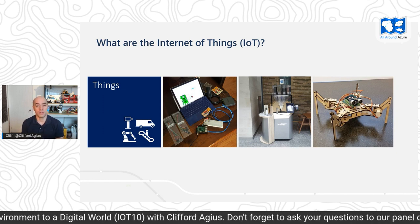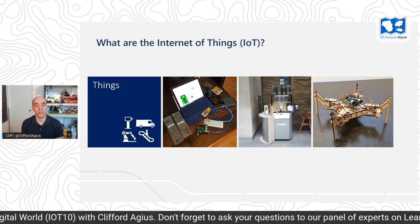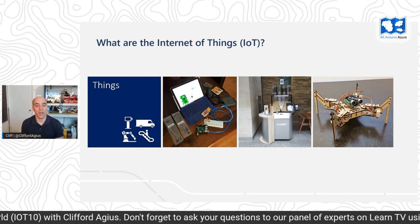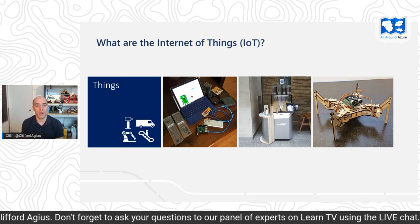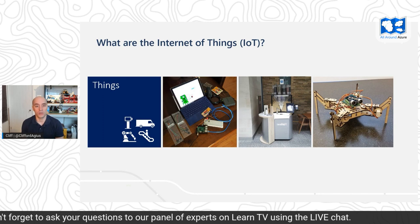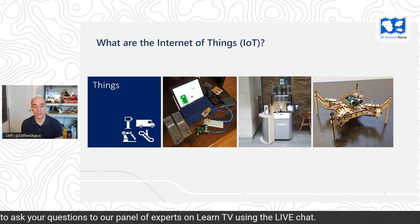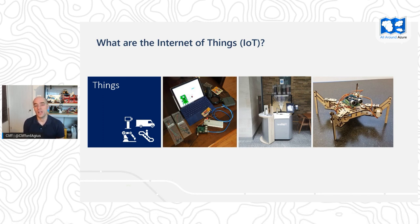Maybe detecting where your trucks are to make sure they're going to the correct locations, or detecting the building environment — do we need to turn the heating on or the air conditioning, that sort of thing? Also, Azure IoT Hub can send signals back down to your IoT devices to change the setting, maybe set an alert that the temperature goes above a certain threshold to raise the alarm or to open the windows.